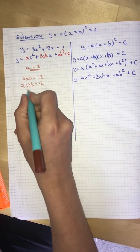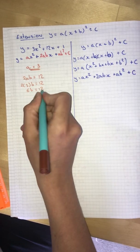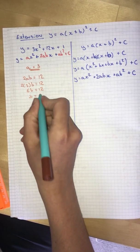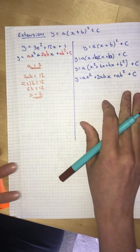2 times 3 is 6. So 6b equals 12. So b equals 2.